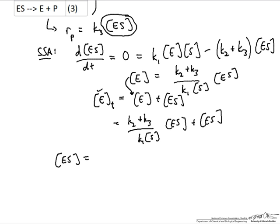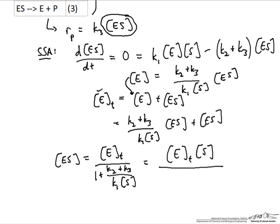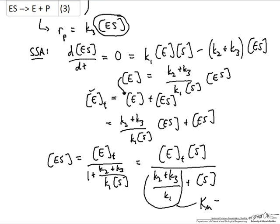Now we can take an additional algebraic step and solve for the concentration of enzyme-substrate complex in terms of the total enzyme concentration — which is fixed, that's how much we added at the beginning of the reaction. That's expressed in terms of a collection of rate constants for our three reactions and the concentration of substrate. We multiply numerator and denominator by the concentration of substrate, and then we get the classical Michaelis-Menten form. We take K2 plus K3 over K1 and define that as the Michaelis constant, Km.